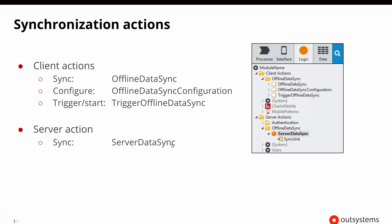Let's look at the types of elements available to help us do this inside OutSystems 10. If we go to the logic tab, we can see there are a number of offline data sync client actions: the offline data sync action, the offline data sync configuration action, the trigger offline data sync, and there's also a server action called server data sync. We'll look at each one and see how it fits into the steps mentioned earlier.